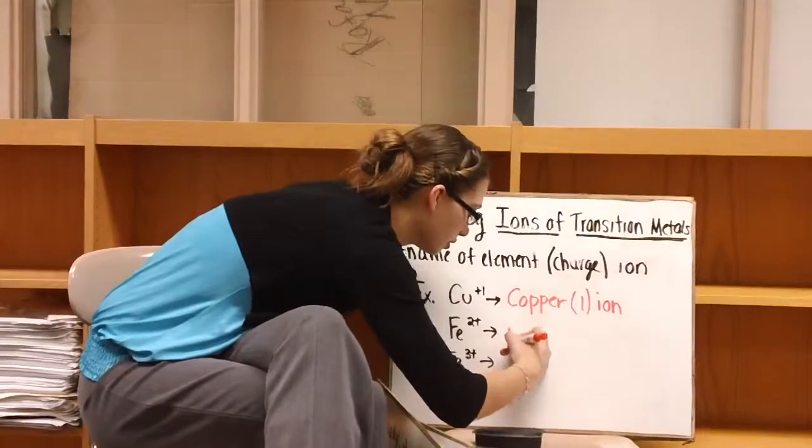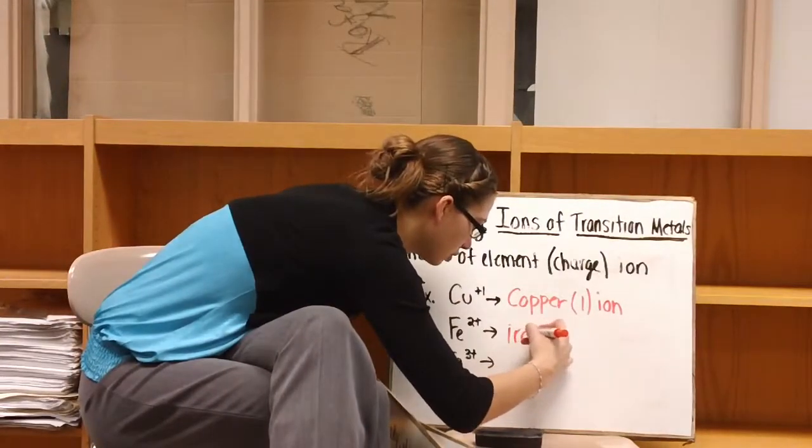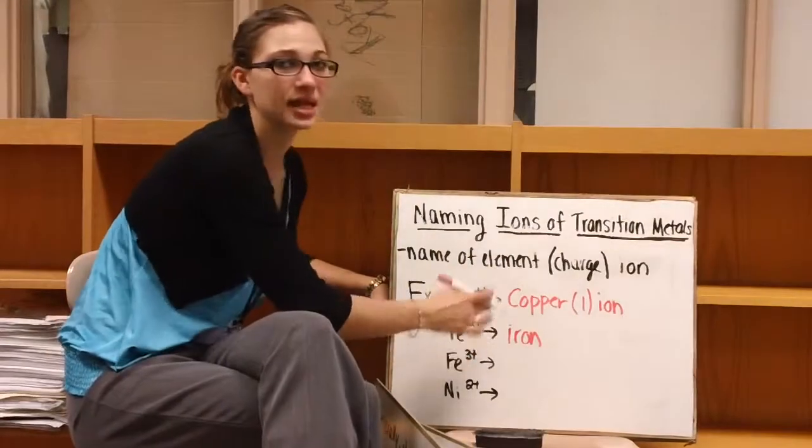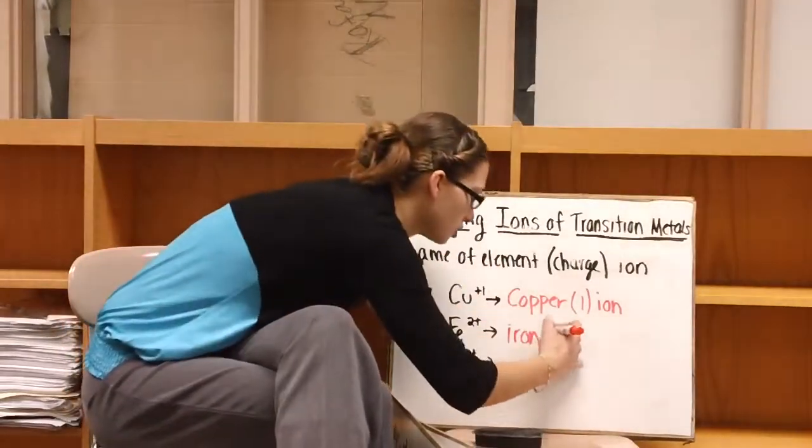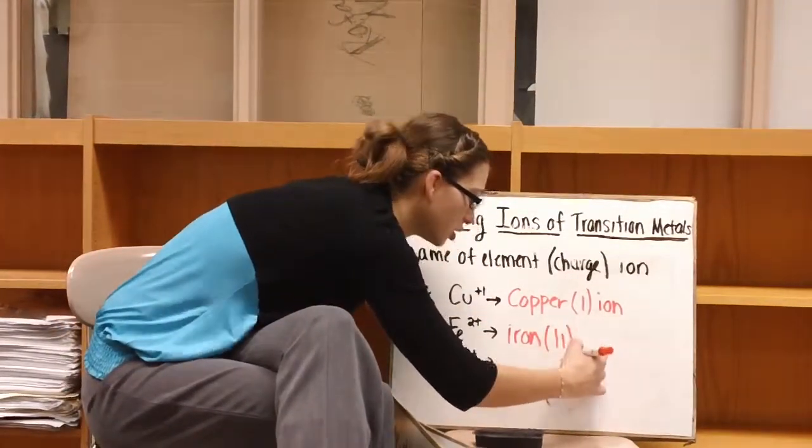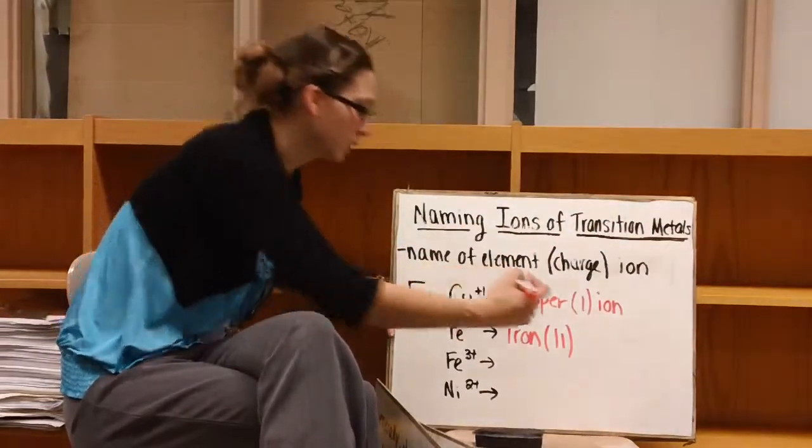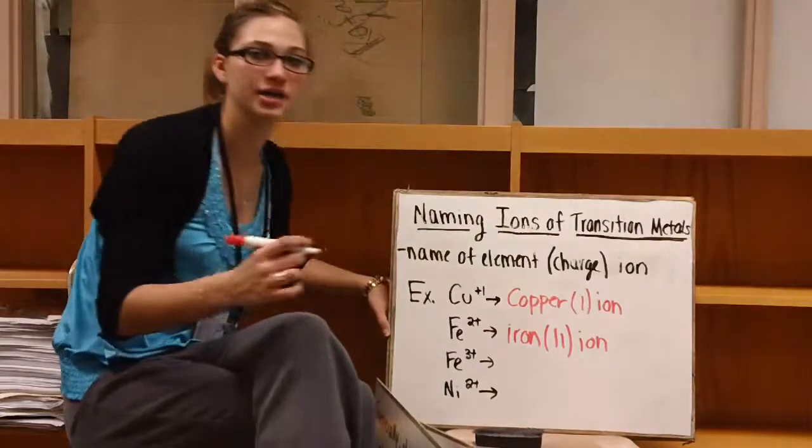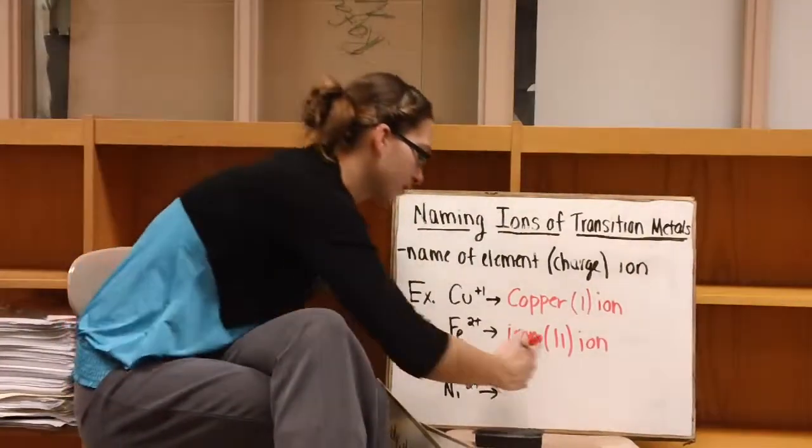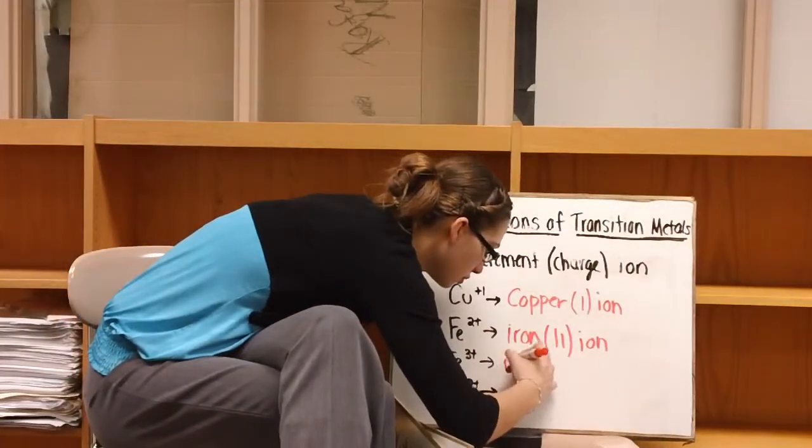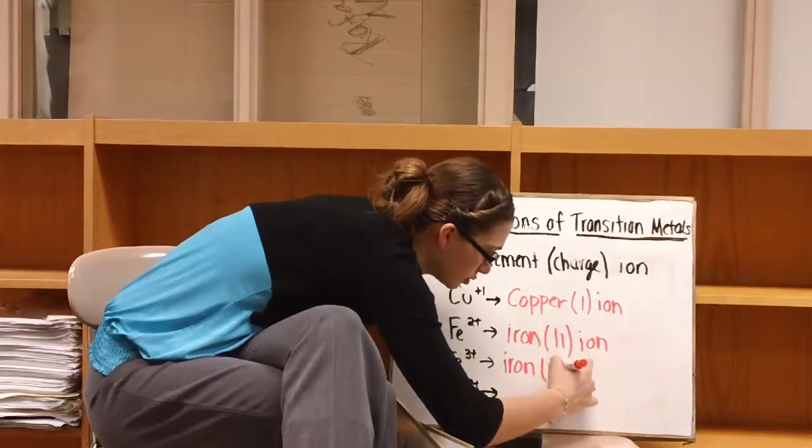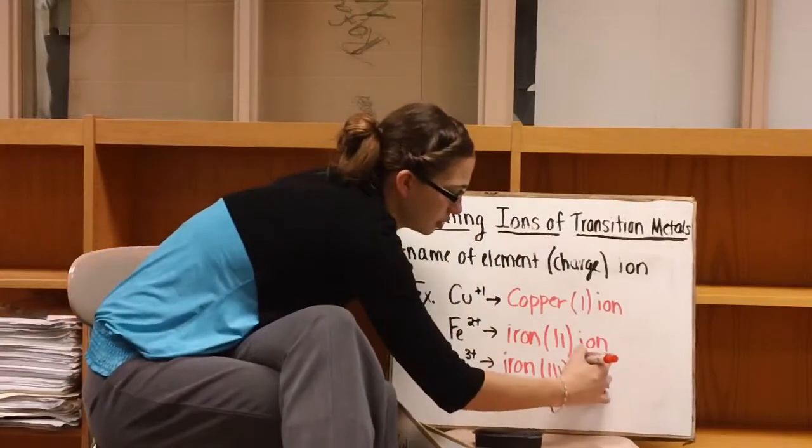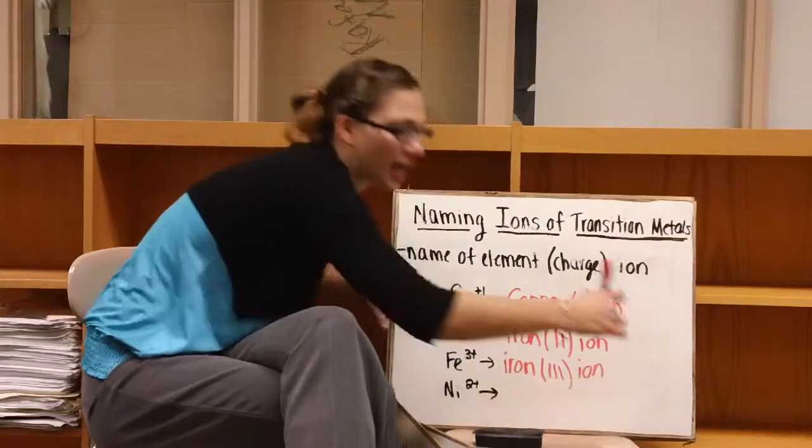All right, for iron, we can write the word iron, and then it tells us that it's a plus two charge. So we write the Roman numeral two, and then ion. Next one. Iron. Roman numeral three. And the word ion.